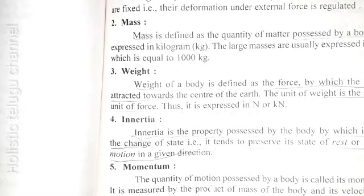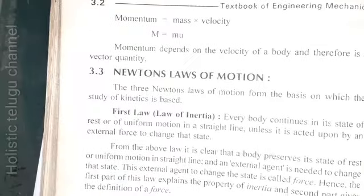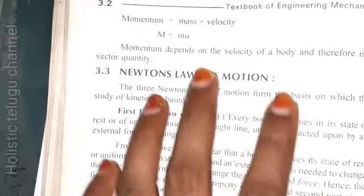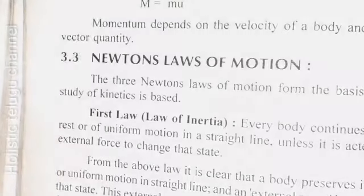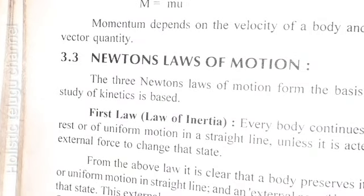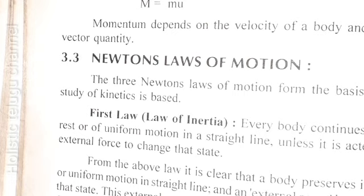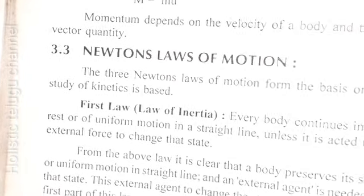Momentum: the quantity of motion possessed by a body is called momentum. Momentum is equal to mass into velocity. So capital M equals mu. Momentum depends on the velocity of your body, therefore it is a vector quantity.